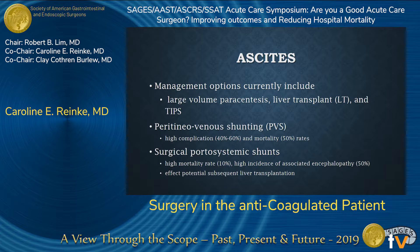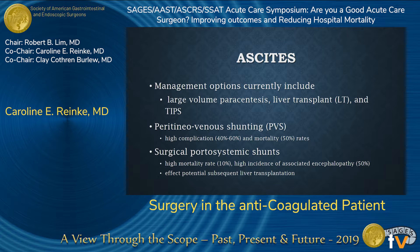Management options for ascites include large volume paracentesis, liver transplant, and TIPS. Historical surgical procedures such as peritoneovenous shunting and surgical portosystemic shunts have largely gone out of favor due to their high complication rates.